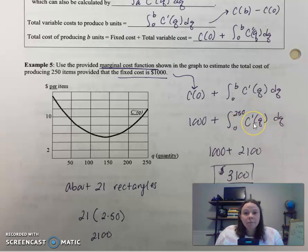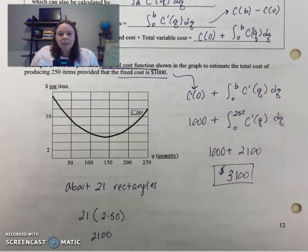So see, we don't know the original function. So that's why we're using this definite integral. Now you got to go back and we've got to somehow estimate this area under c prime.